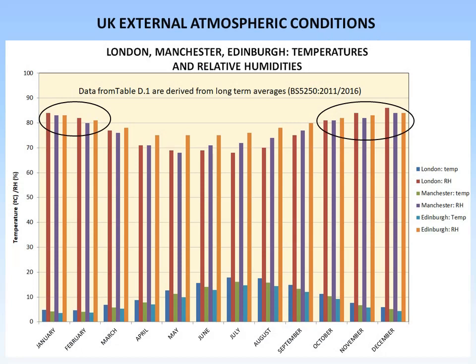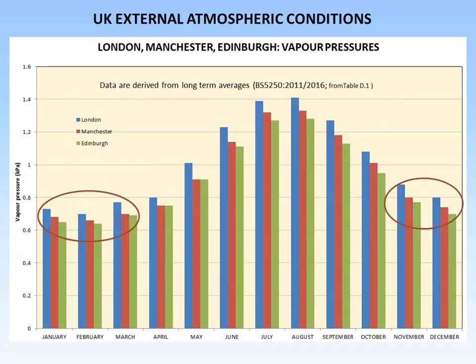First, we need to look at UK external atmospheric conditions. In the colder months, external relative humidities are very high — around 85%. In summer months they are lower, but still around 70% relative humidity. Converting those figures to vapour pressures, which directly measure the actual amount of vapour in the air, shows that during colder months vapour pressures are pretty low, whereas in July and August they are very high — effectively double those found during colder months.